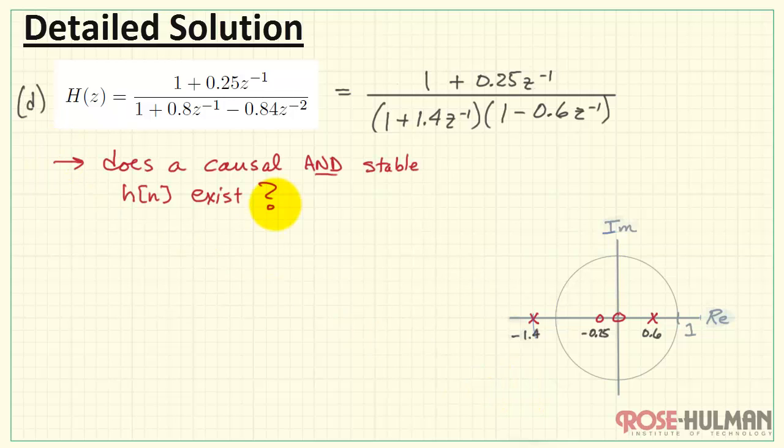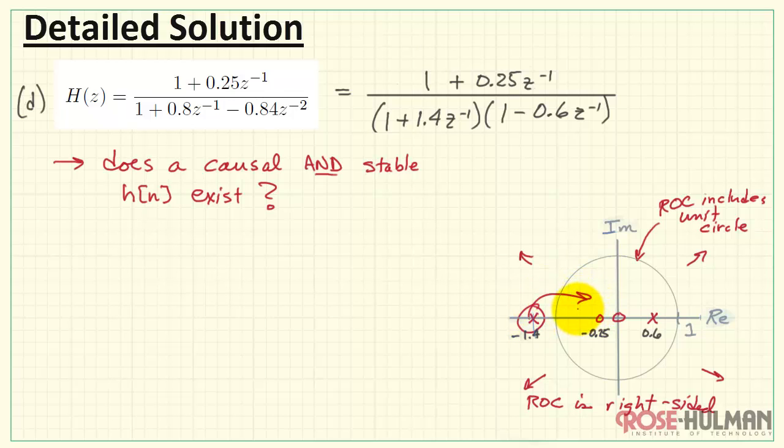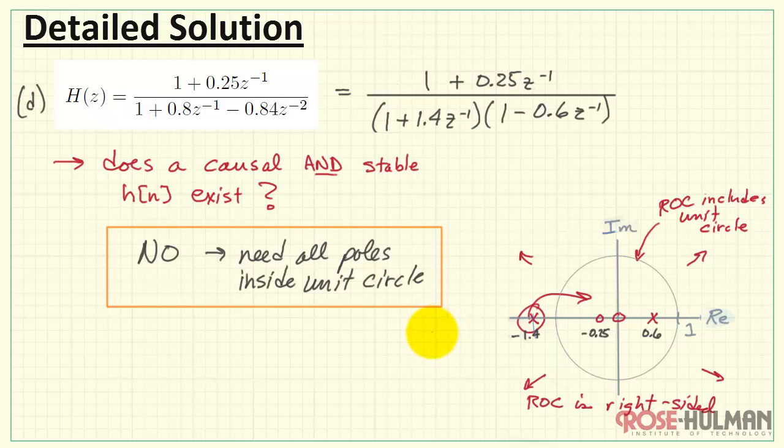Lastly, in part d, does a causal and stable impulse response exist? Well, as we return to our pole-zero diagram, we know that the causality would require that a region of convergence is completely right-sided. However, stable says that we need to include the unit circle. Looks like the only way we can make this work is if this pole were moved inside the unit circle. Therefore, we would conclude, no, this is not possible. We would need all the poles to be inside the unit circle. And that's part d, and that wraps up this example.